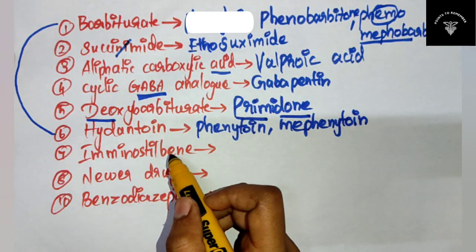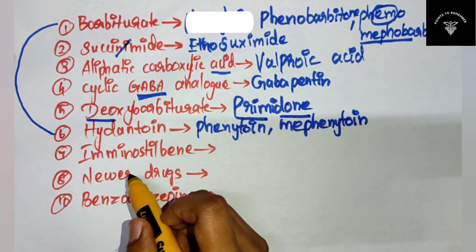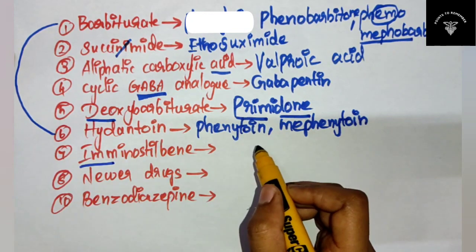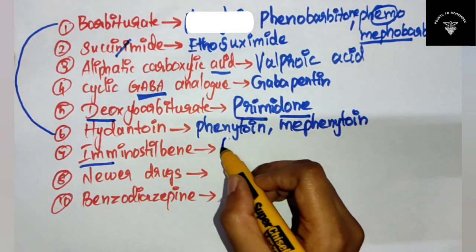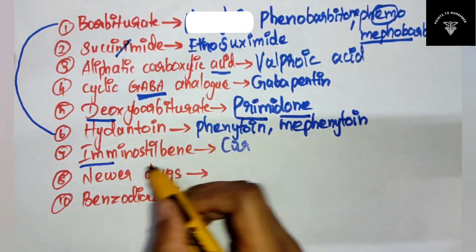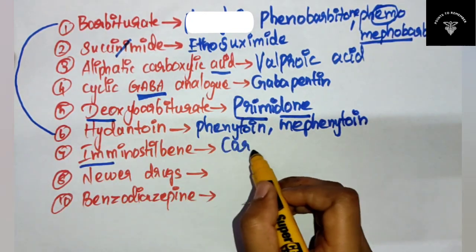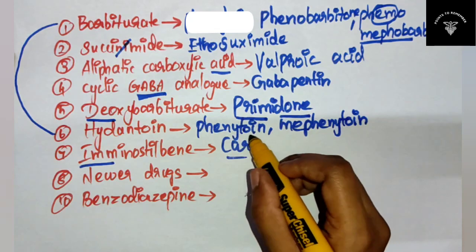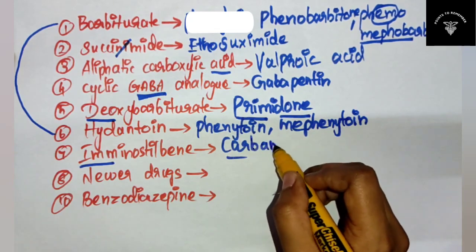Iminostilbene - that is immediately he buys a car. So you can remember like immediately he buys a car - that is carbamazepine.